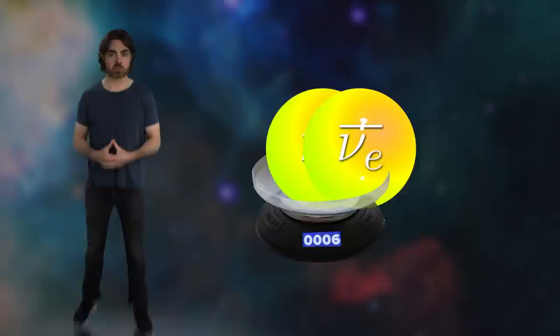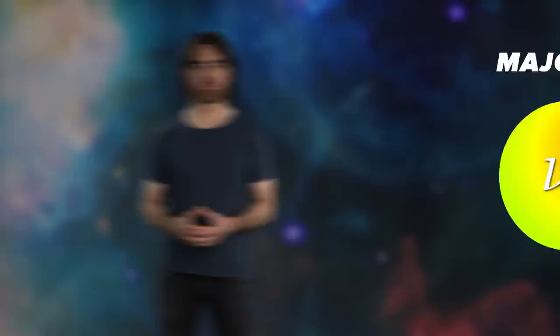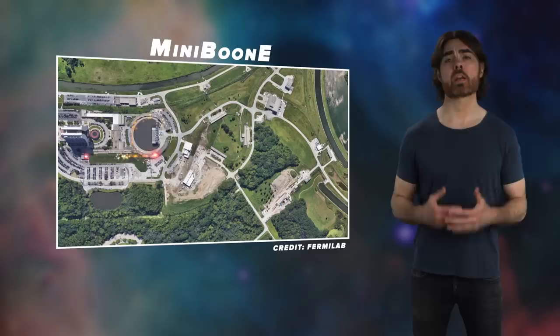That mass may indicate the existence of the sterile neutrino, but it could also come from some more exotic mechanism. For example, the Majorana mechanism that would require the neutrino to be its own antiparticle and would break the standard model even more than the existence of the sterile neutrino. OK, let's get to the experiment.